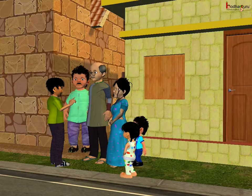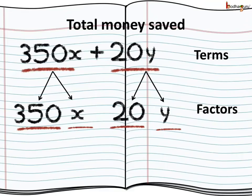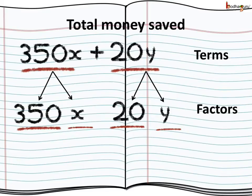Say a student decided to save rupees 20 daily from money earned through selling snacks to pay for coaching fees. If he took x number of tuitions and saved rupees 20 daily for y days, then the total money saved would be 350 multiplied by x plus 20 multiplied by y. Here, 350x and 20y are the terms of the expression 350x plus 20y. The factors of 350x are 350 and x, and the factors of 20y are 20 and y.